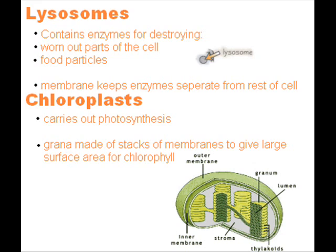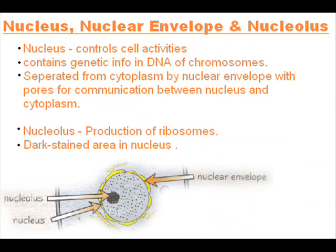Some parts of photosynthesis happen in the grana, and other parts happen in the stroma, a thick fluid found in chloroplasts. The nucleus is a large organelle that is surrounded by something called a nuclear envelope — a double membrane.